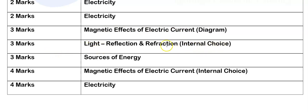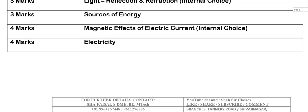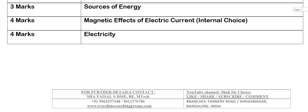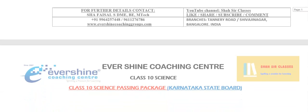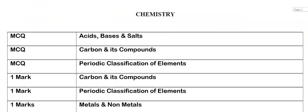The next 3-mark question from the chapter light is an internal choice — they have given 2 questions and you need to answer any one. The next 3-mark is from sources of energy. The 4-mark is from magnetic effect of electric current, again with a choice — out of 2 questions you have to answer any one. The next 4-mark question is from the chapter electricity. I hope you now have a clear picture of which area and how many marks questions have been asked from physics in model paper number 1.